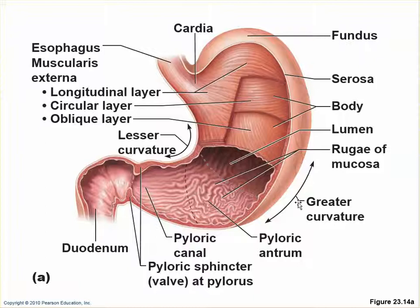The inside of the stomach has all kinds of folds, which increase surface area and allow the stomach to expand — kind of like an accordion. Those are called the rugae. You'll note that the rugae mostly run in a pattern that follows the curvature.